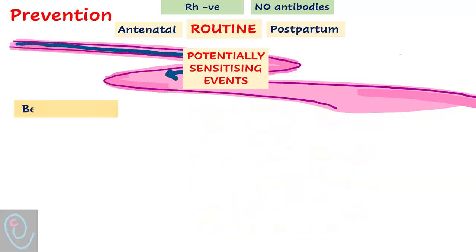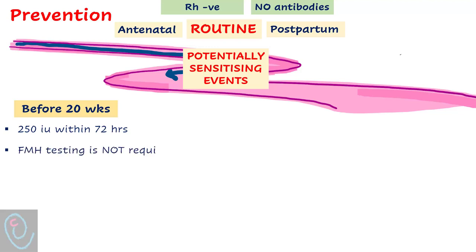Also give Anti-D for abdominal trauma and intrauterine fetal death. Before 20 weeks, 250 international units is given within 72 hours of the sensitizing event, and fetomaternal hemorrhage testing is not required. If there is continual bleeding, give at least 250 international units at a minimum of six-weekly intervals.